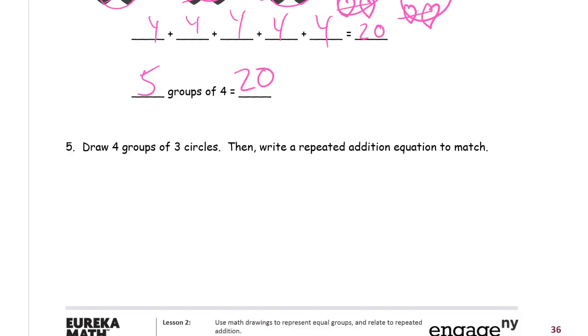And finally, draw four groups of three circles and write a repeated addition equation to match. So four groups of three circles. So that's each group has three circles and I need four groups.